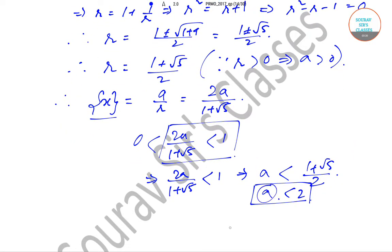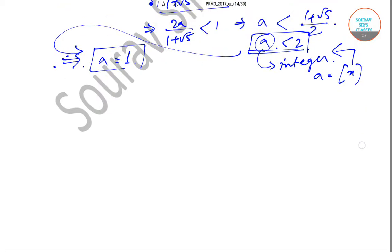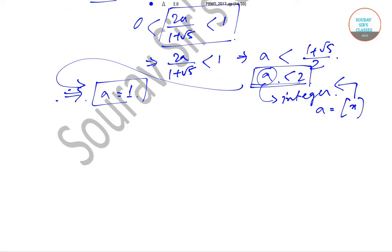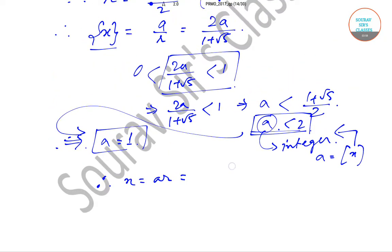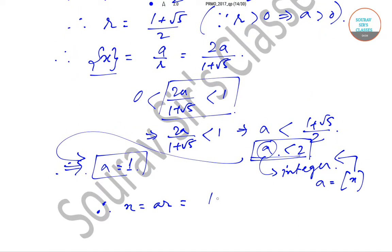We know that a is an integer since we took a equal to the greatest integer of x, which is always an integer. So a must equal 1. Therefore x equals ar, which is 1 times r, giving us x equal to (1 + √5)/2.